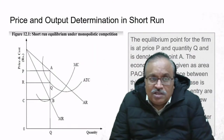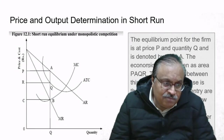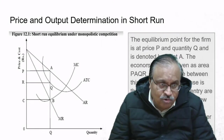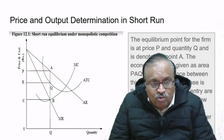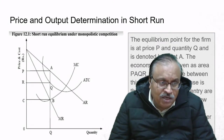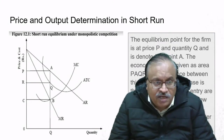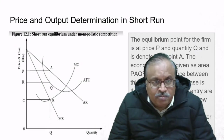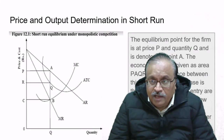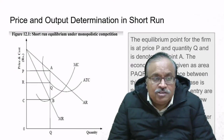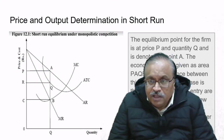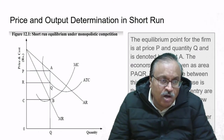Price and output determination in the short run. Looking at the graph: on the x-axis is price and cost, on the y-axis is quantity. There are two demand curves—AR (average revenue) and MR (marginal revenue)—and marginal cost and average total cost curves. The equilibrium point for the firm is at price P and quantity Q, denoted by point A. The economic profit is given as area PAQR.